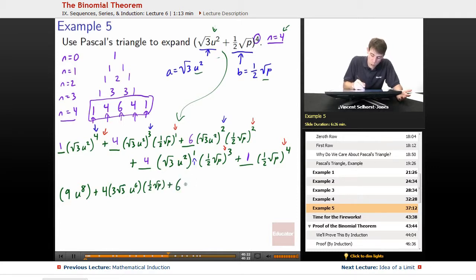1 half root p to the 1 is just 1 half root p, plus 6 root 3 squared, root 3u squared squared, root 3 squared is 3, u squared squared is u to the 4th, times 1 half root p squared will be 1 over 4. 1 half squared is 1 half times 1 half, so 1 over 4, root p squared is p.